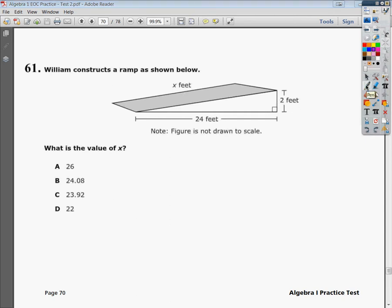Welcome, this is the Algebra 1 End of Course Practice Test 2, question number 61. The question says, William constructs a ramp shown below, what is the value of x?